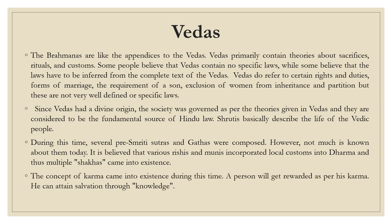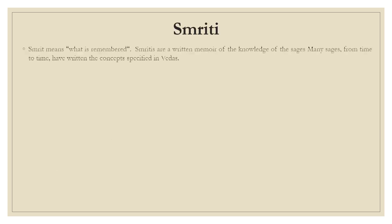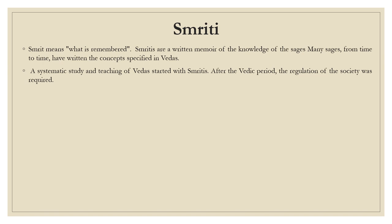The concept of karma came into existence during this time. A person will get rewarded as per his karma, and he can attain salvation through knowledge. The second ancient source is Smriti, which means what is remembered. Smritis are a written memoir of the knowledge of the sages. Many sages from time to time have written the concepts specified in Vedas. A systematic study and teaching of Vedas started with smriti.